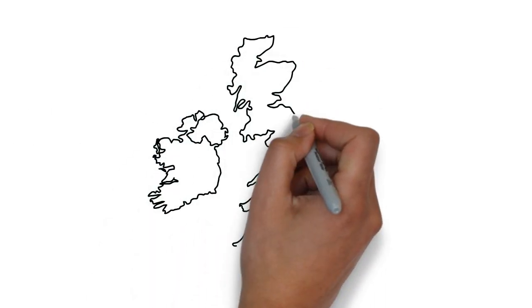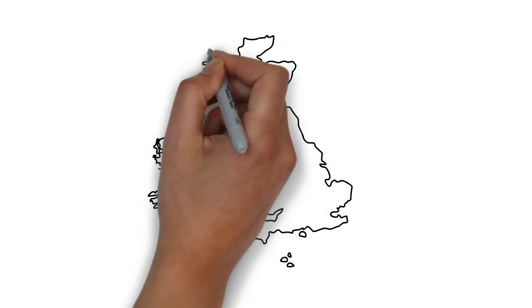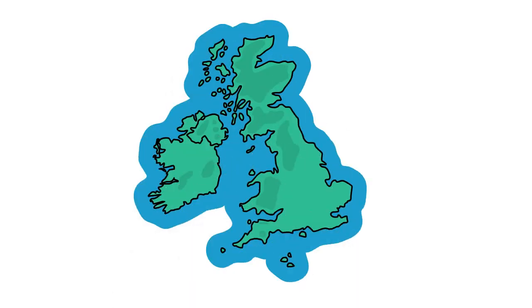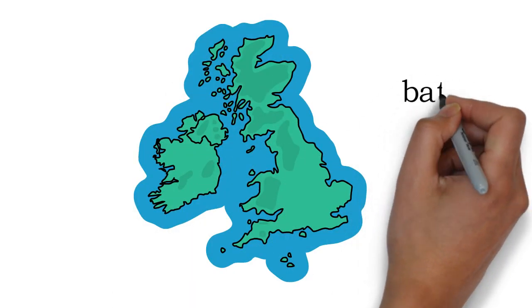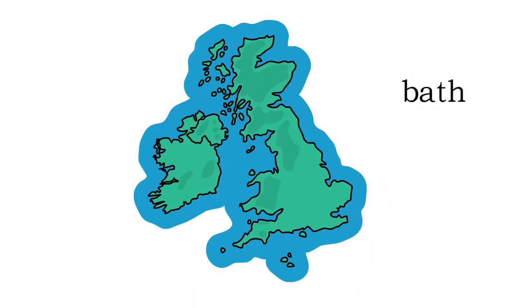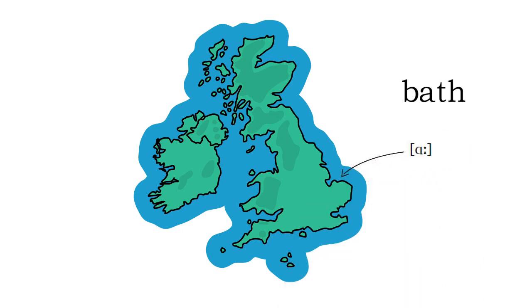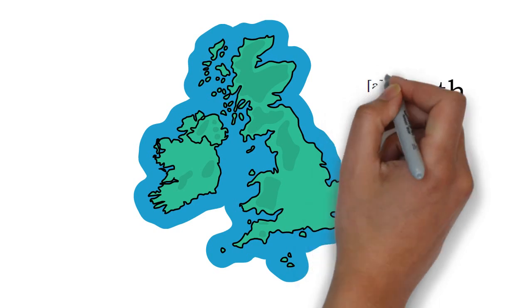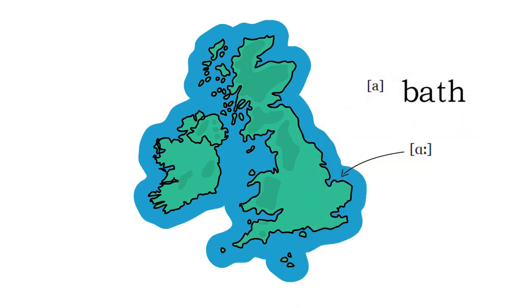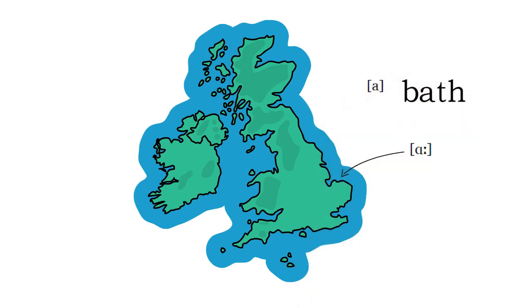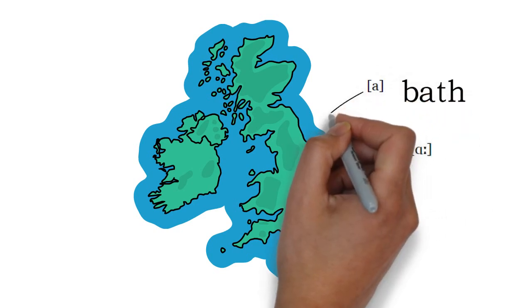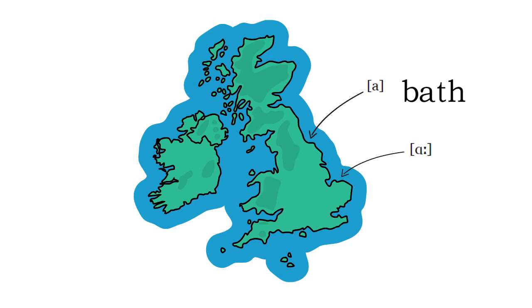In the south of England, generally people pronounce the word bath with a long vowel and a back tongue position, like so: bath. However, in the north of England, the same word is pronounced with a short vowel and a front tongue position: bath.